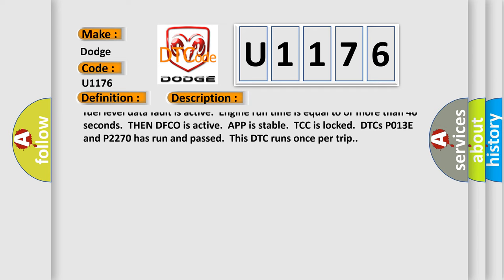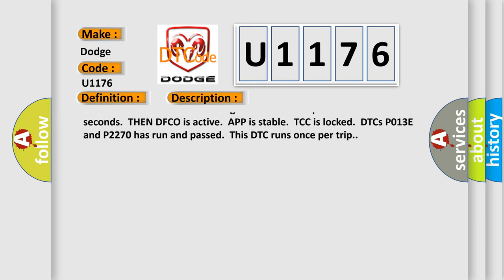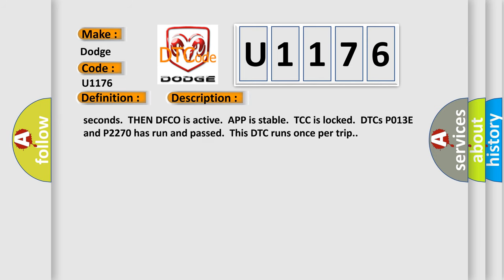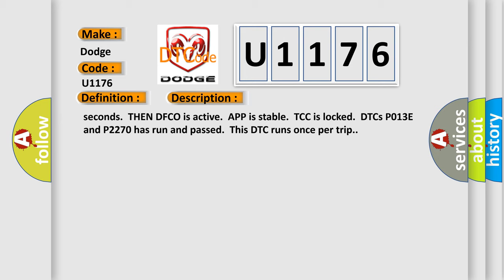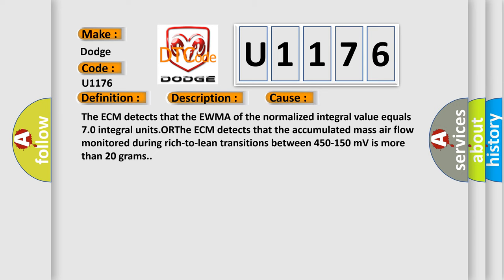The system voltage must be between 10 to 18 volts. The learned heater resistance is valid. The ICAT mat burn-off delay is not active. The green O2 sensor condition is not present. The fuel level is more than 10 percent, or the fuel level data fault is active. Engine run time is equal to or more than 40 seconds. Then DFCO is active, and TCC is locked. DTCs P013E and P2270 have run and passed. This DTC runs once per trip. The diagnostic error occurs most often when the ECM detects that the EWMA of the normalized integral value equals 70 integral units, OR the ECM detects that the accumulated mass airflow monitored during rich-to-lean transitions between 450 to 150 millivolts is more than 20 grams.